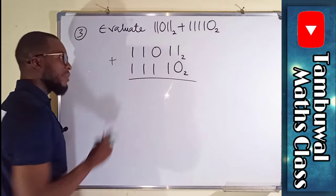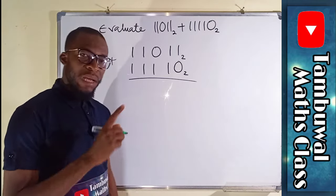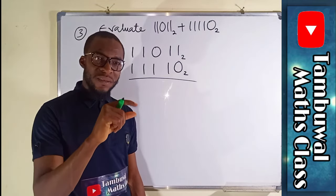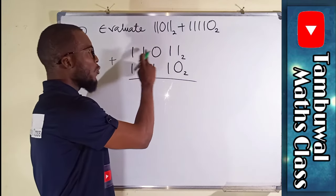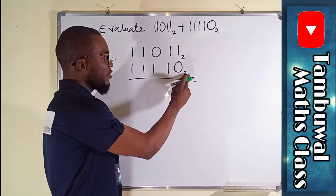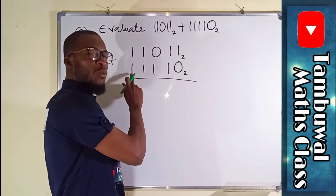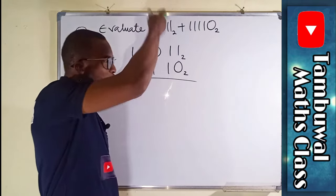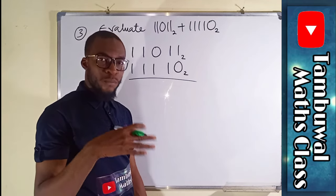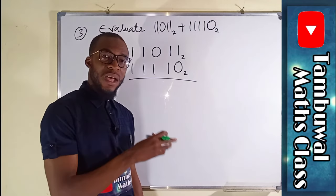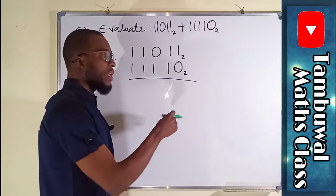We are asked to add them together. Remember, the highest digit in any number base is one less than the base. You can see this is base two and we do not have any two here. This is also base two. The highest digit is one. So if you are adding, once you reach two, you have to use the idea of modular arithmetic, which is remainder arithmetic. Let's see how we can add them together.